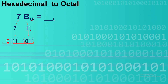We will group into 3. Since there is no other number here, we can add a 0. So each group converts as follows: 0, 1 — the next number is 0, 1 — the next number is 0, 1.